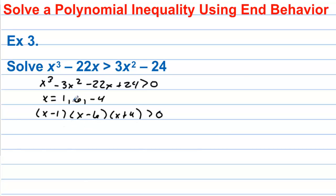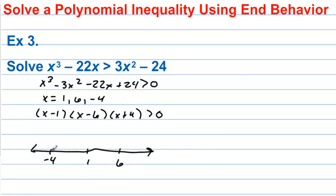We already have the values that make this 0, and we'd have to go through the whole process of synthetic division — for the sake of time I'm not going to do that in this video. We have negative 4 over here, then 1, then 6. This doesn't say equal to 0, so we're not going to include any of these values. Let's test negative 5, 0, 2, and 7.